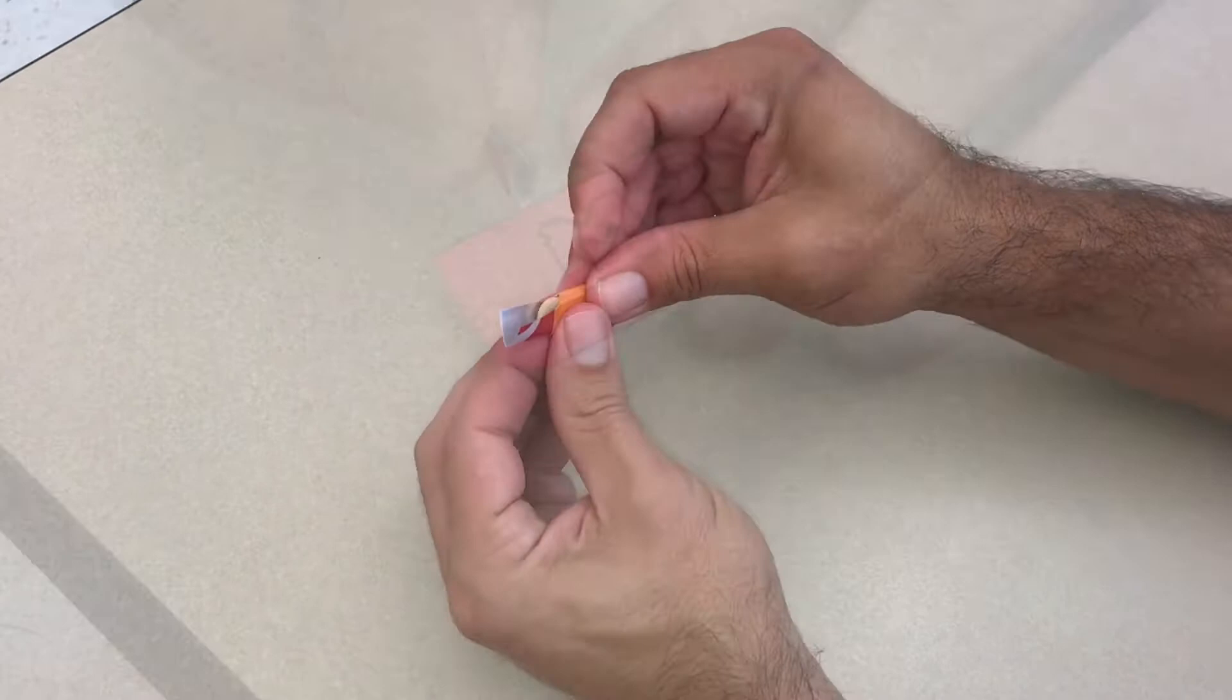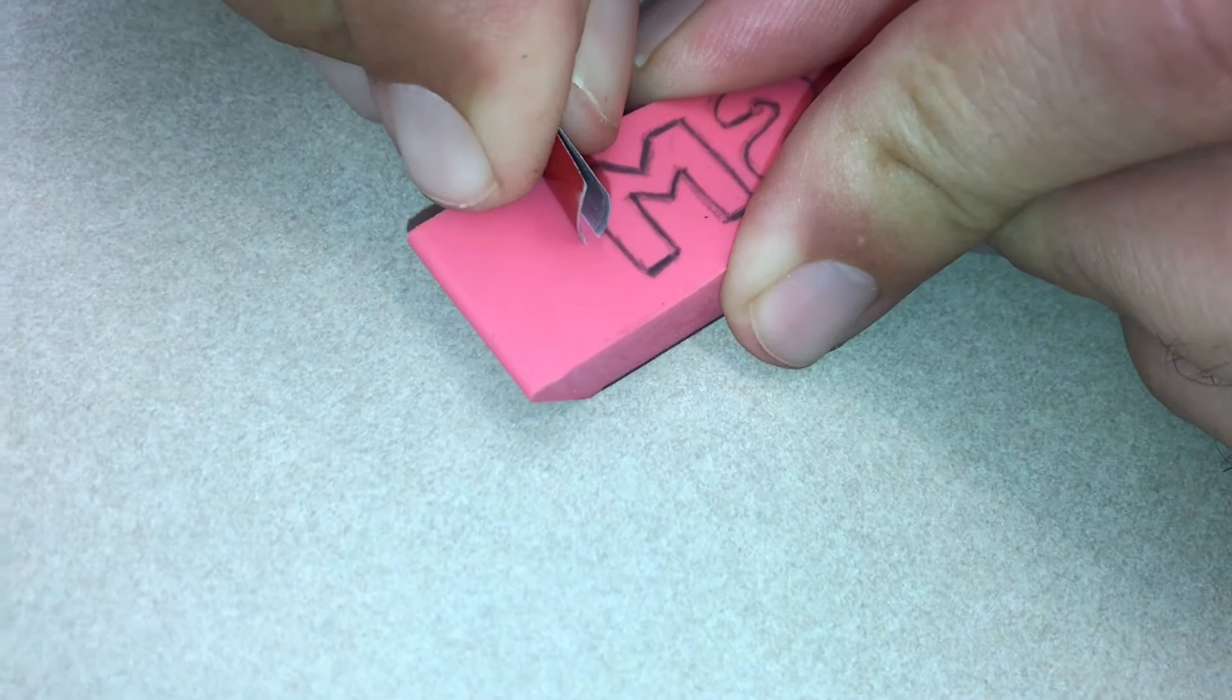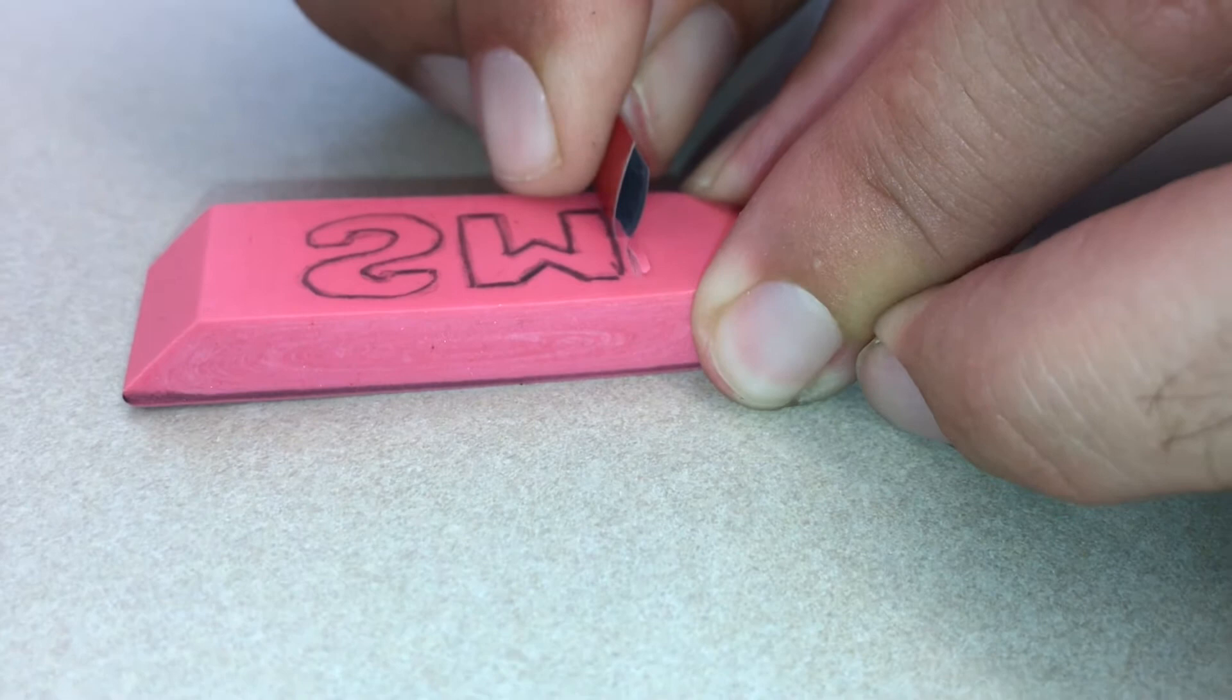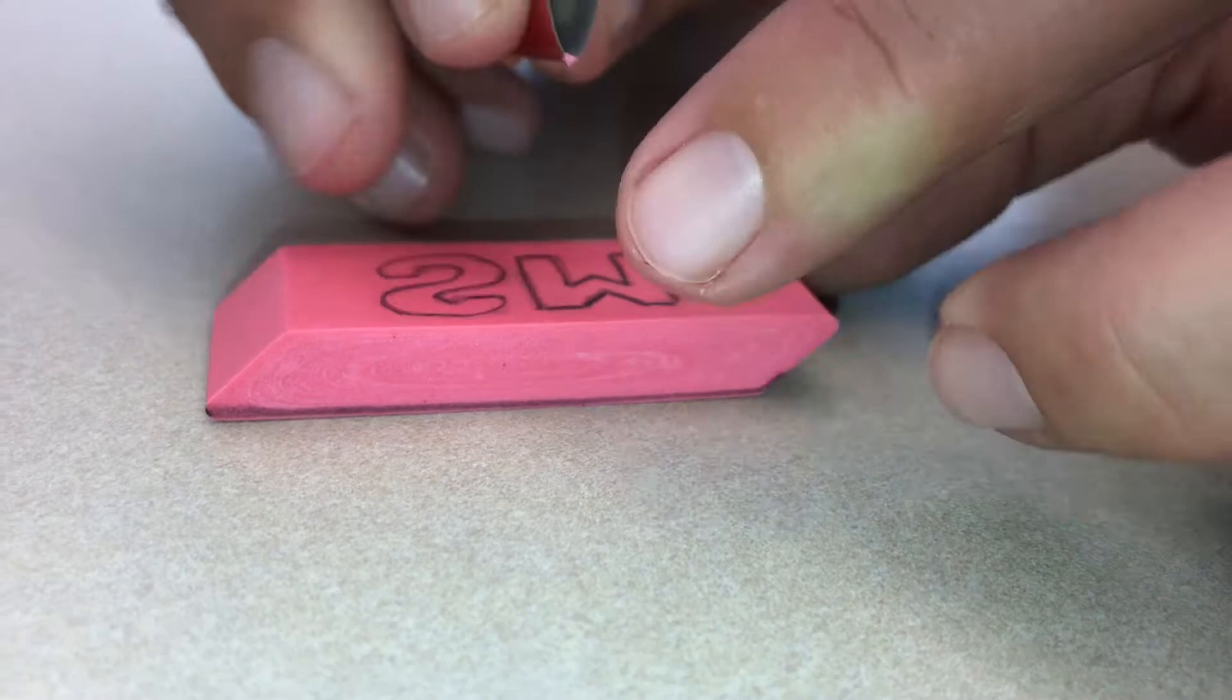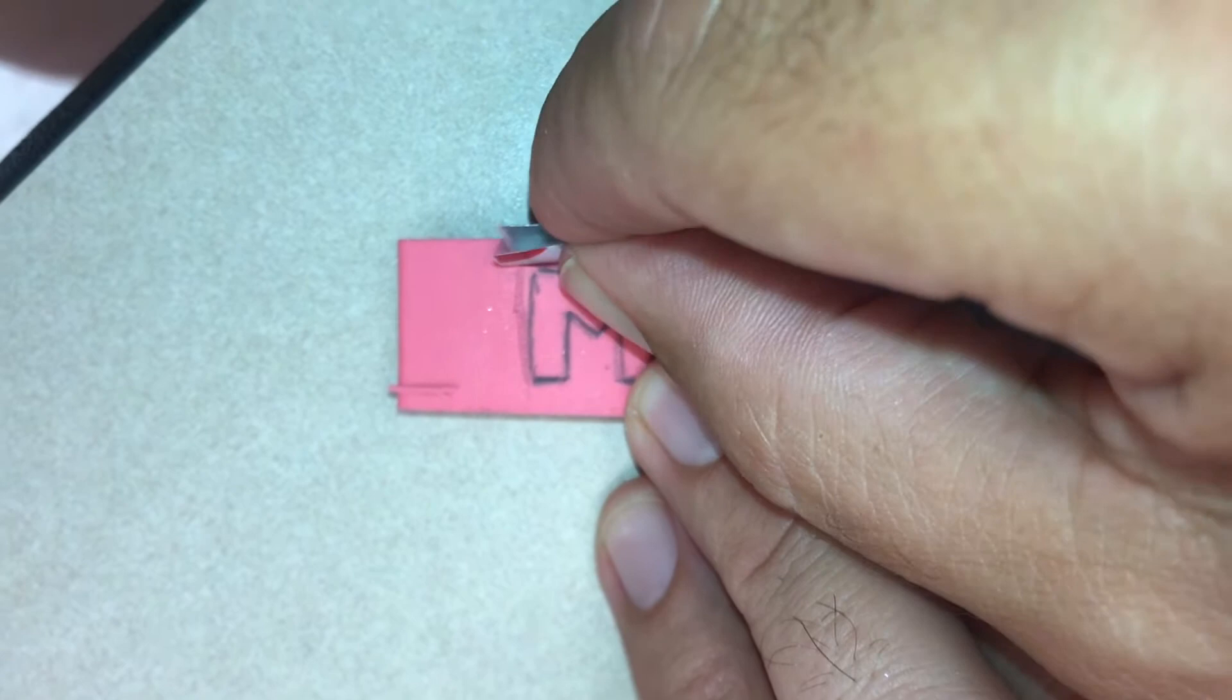Now comes the fun part. Remember, we're carving around the letters, we're not carving the letters out. Notice when I'm carving that I'm pushing the gouge away from me and not towards my fingers.